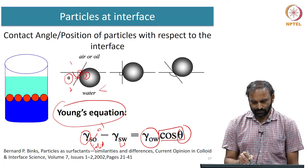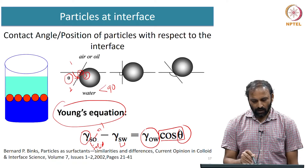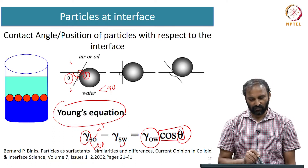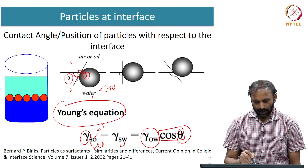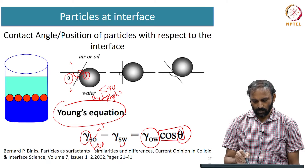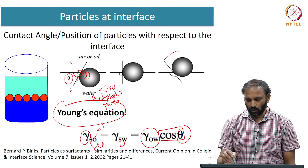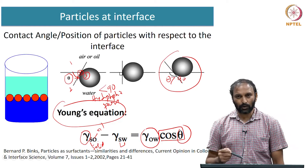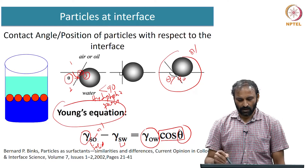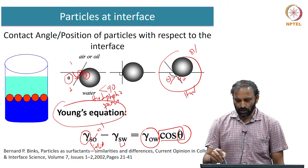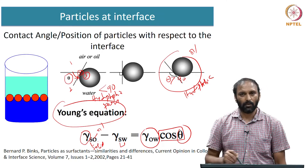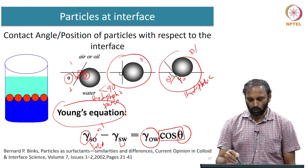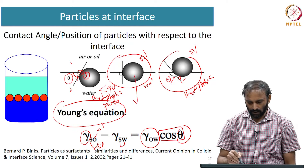If the contact angle is less than 90 degrees, the particle is more in contact with the aqueous phase and such particles are termed hydrophilic. If theta is greater than 90 degrees, the particle prefers to maximize its contact with the oil phase, and such particles are referred to as hydrophobic. If the particle is in equal contact with both the oil phase and the aqueous phase, such particles are termed neutrally wetting.